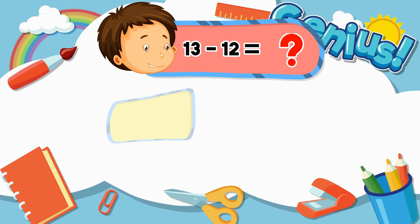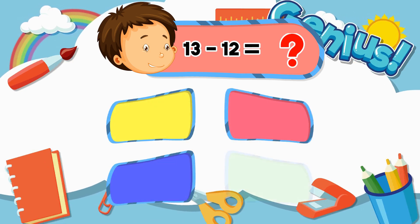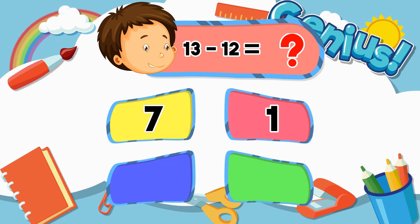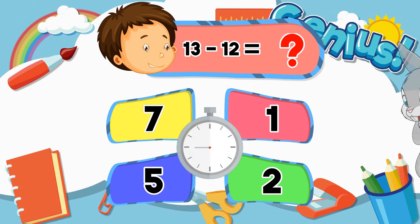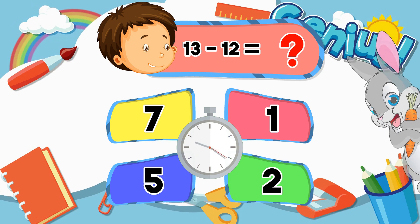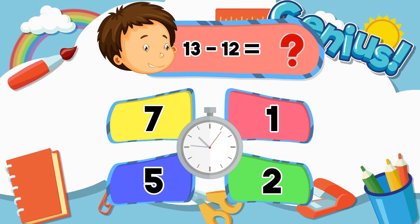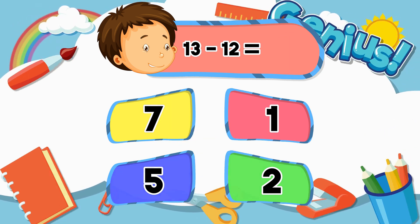What is thirteen minus twelve? Seven, one, five, two. One.